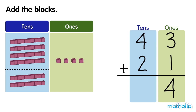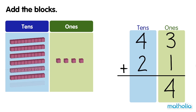Now let's add the tens. Four tens plus two tens equals six tens. There are 64 blocks altogether. 43 plus 21 equals 64.